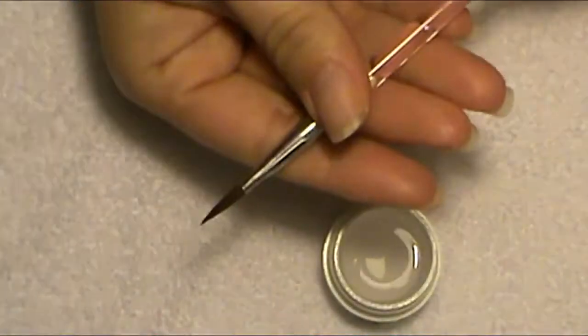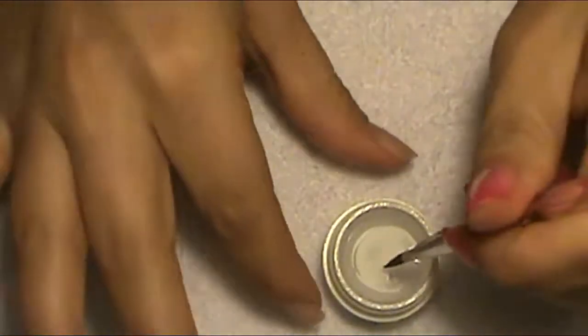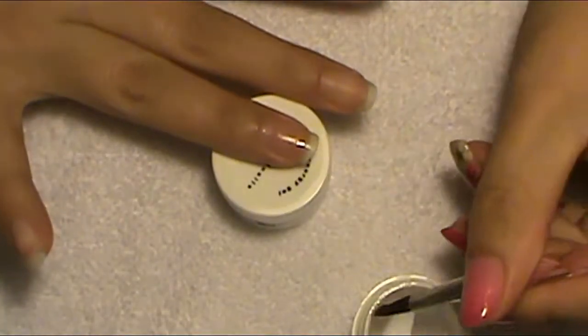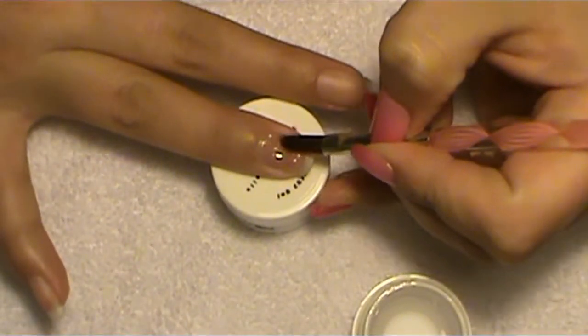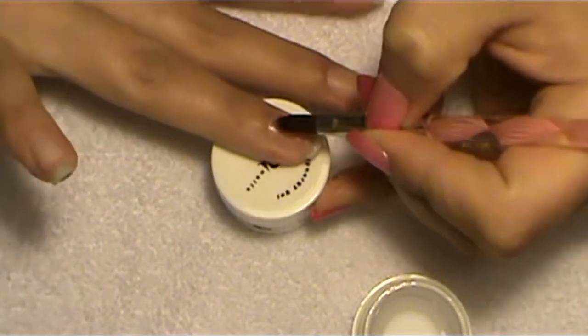So here I have my base coat and I'm just going to be using my little gel brush and I'm just going to apply a thin, very thin layer. You don't need to go thick on this, it's just something for the gel to stick to, so just apply just a very thin layer if you are using this particular brand.